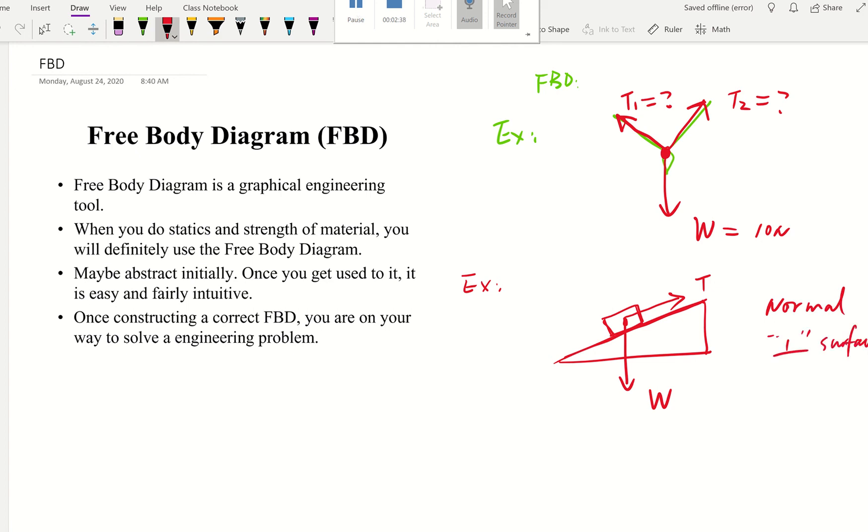So because of that, we'll have normal force going straight upward, perpendicular to the slanted surface. We call it N, short for normal force. And we also already know there is a tension here.